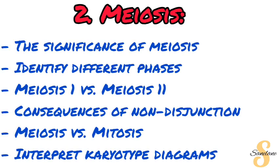The second topic on our scope is Meiosis. Under it, you need to be able to describe the significance of meiosis, identify the different phases of meiosis, differentiate between meiosis 1 and meiosis 2, explain the consequences of non-disjunction, differentiate between meiosis and mitosis, and lastly be able to interpret the karyotype diagrams.